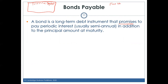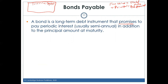The face value of the bond — also called the stated value, the principal, or the amount the borrower promises to pay the lender — is typically $10,000. These are all different words for the same thing. It's the amount the borrower promises to give the lender at maturity. Usually it's simply called the face value.